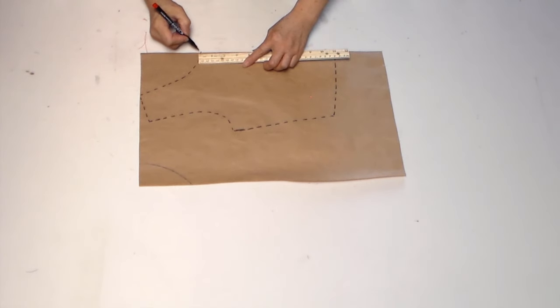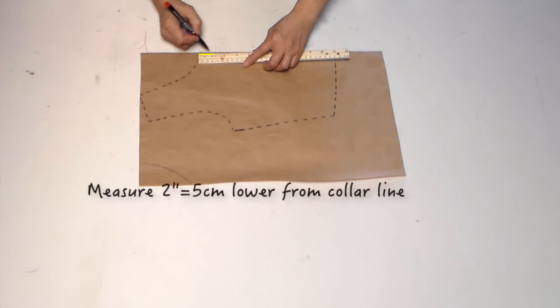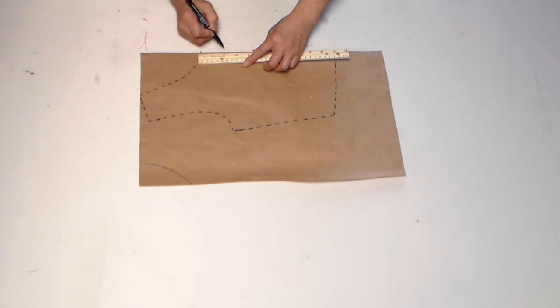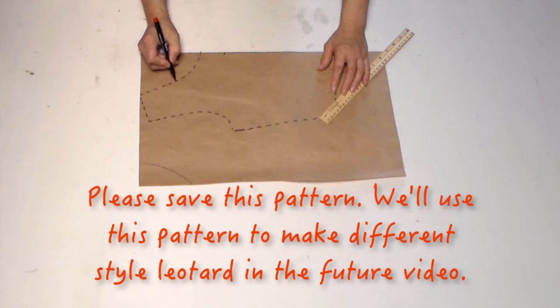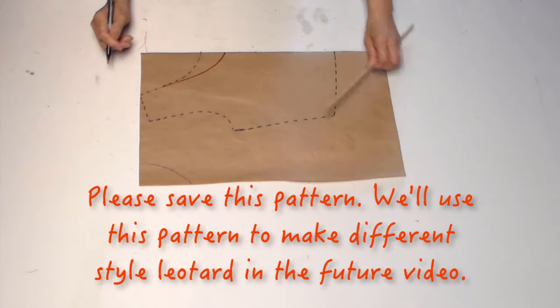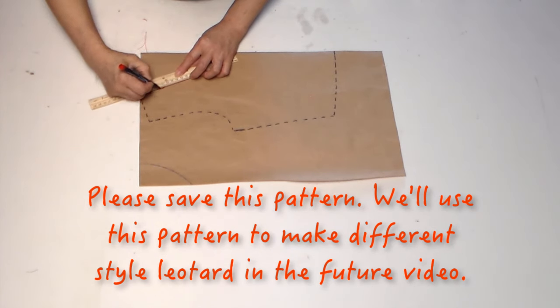This is the back pattern. I like to make the color lower than the front. By the way, please save this pattern in the future use. I will show you how to make different style leotard in the future video. We will use this pattern again.